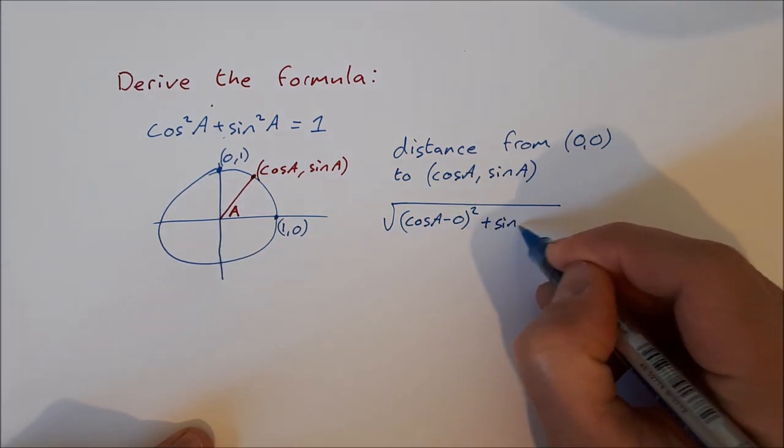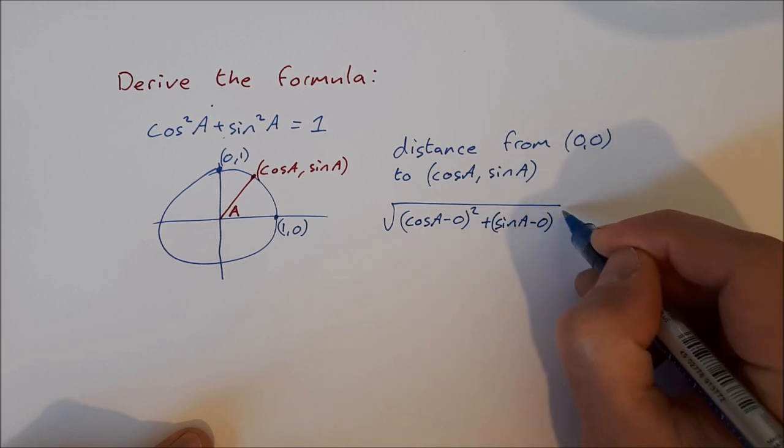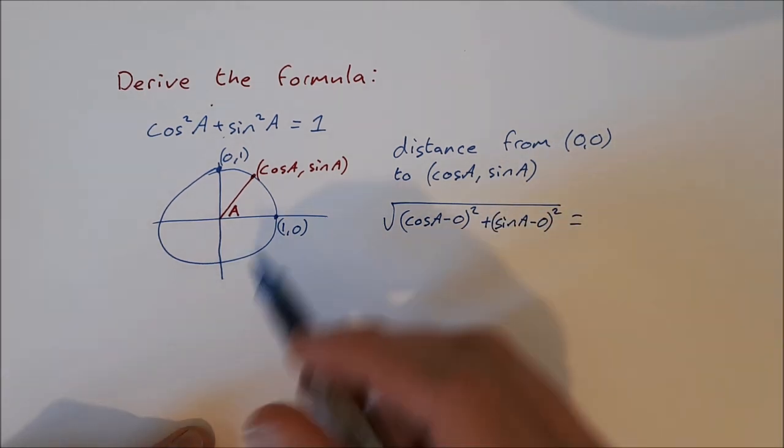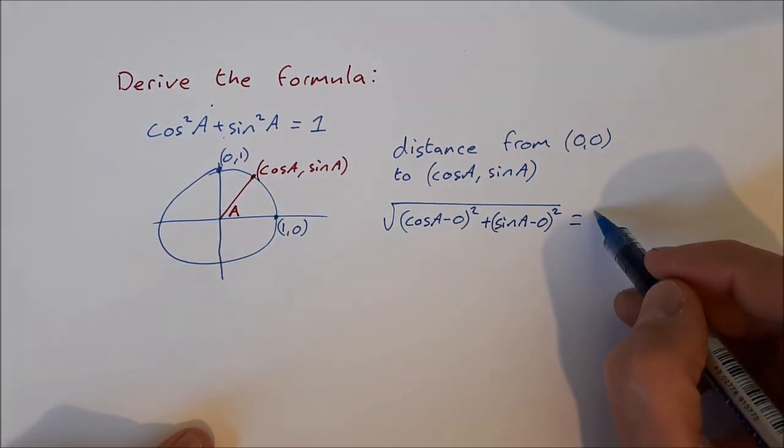And we know that distance in a unit circle is equal to 1.